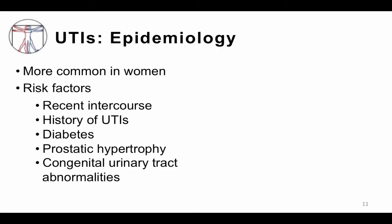As you may know, UTIs are more common in women. Men tend to be protected due to longer urethras and antimicrobial prostatic secretions. Other important risk factors include recent intercourse, a history of urinary tract infections, diabetes, prostatic hypertrophy or BPH, and congenital urinary tract abnormalities. Also important are indwelling urinary or bladder catheters, which are common in the hospital and greatly increase your risk of a hospital-acquired urinary tract infection.